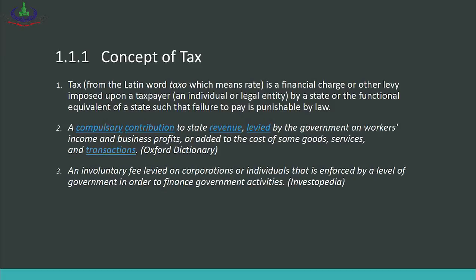Our second definition: tax is basically a compulsory contribution to state revenue levied by the government on workers' income and business profits, or added to the cost of some goods, services, and transactions. According to this definition, tax is a compulsory contribution that every taxpayer must pay, treated as state revenue. Workers pay it from their income, businesses pay it on their profits, or it can be included in the cost of various goods and services.